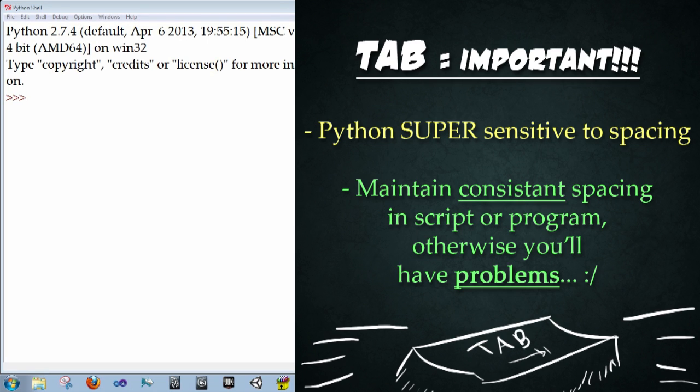Before we begin, I want to stress the importance of the tab button. Python is super sensitive to spacing. If you use four spaces or the tab character, you need to keep that continuity throughout the whole thing. For using the Python shell in IDLE, you need to use the tab button. But in things like Maya, it uses four spaces. Why? I don't know. But it's something to be very aware of.